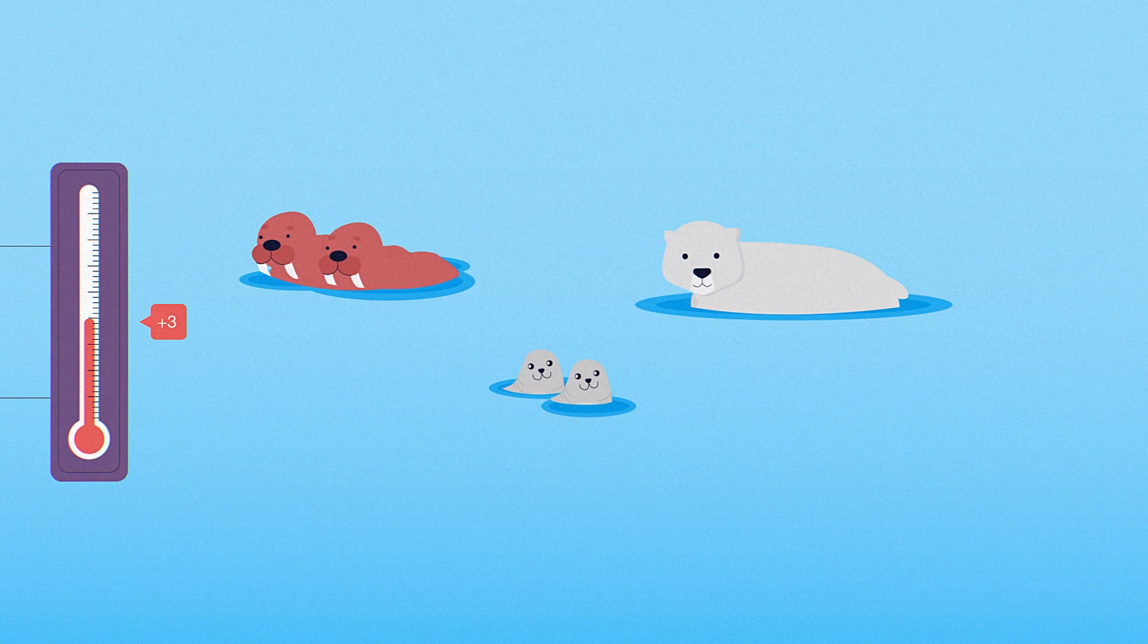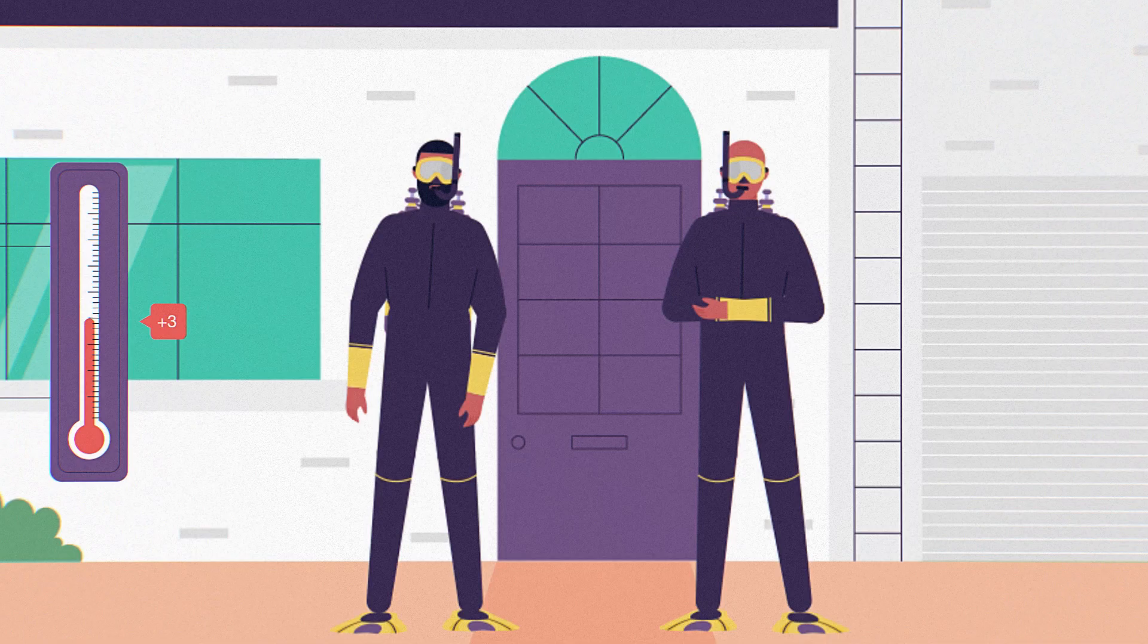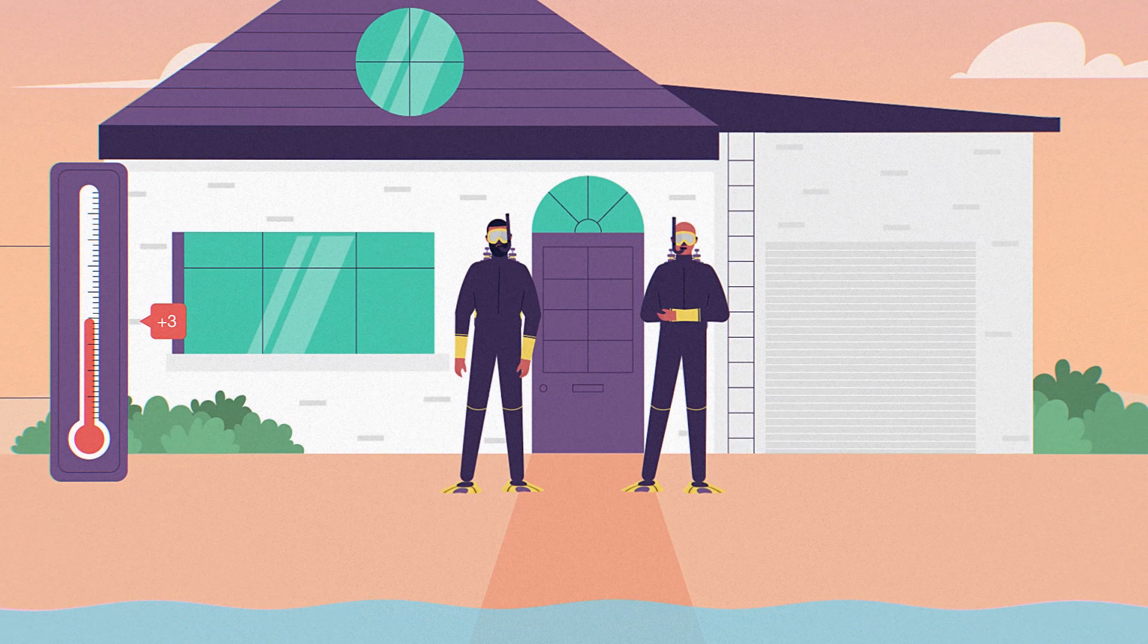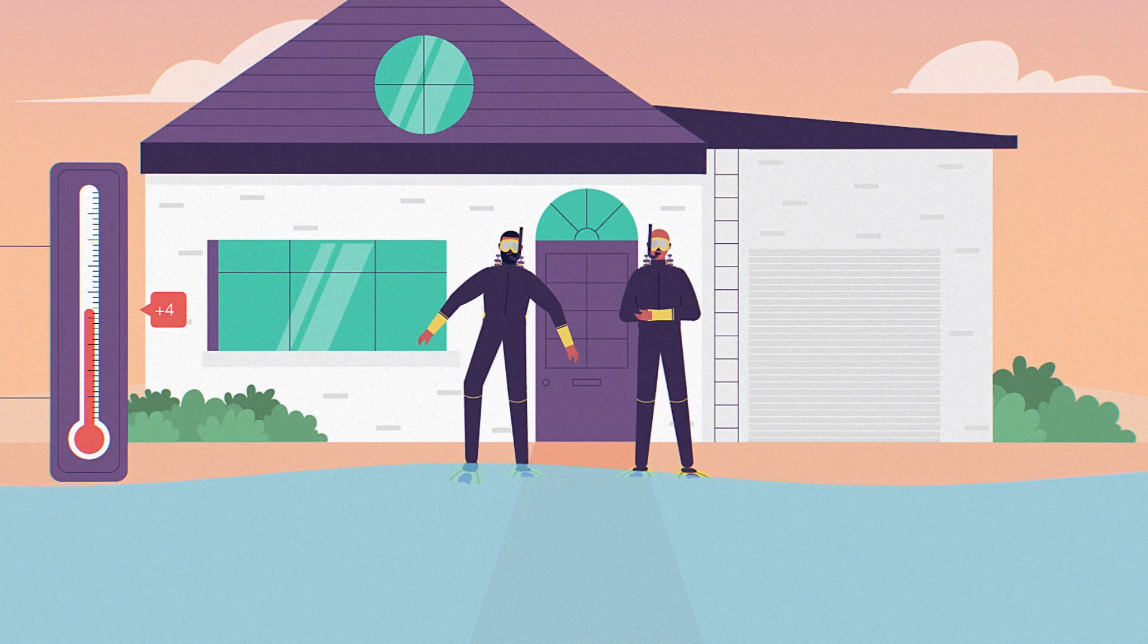For example, at plus 3 degrees, there is a 63 percent chance that the Arctic will be ice-free in any given summer. At plus 3 degrees, sea levels rise more than 56 centimeters.